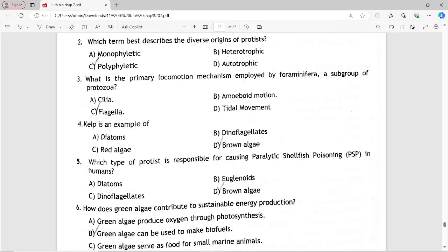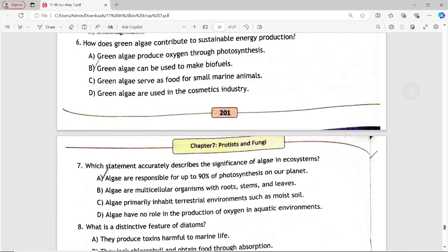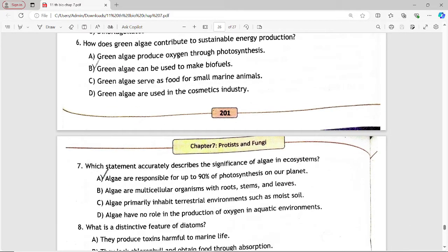Next MCQ: How do green algae contribute to sustainable energy production? Options are: green algae produce oxygen through photosynthesis; green algae can be used to make biofuels; green algae serve as food for small marine animals; green algae are used in the cosmetics industry. Answer is option B: green algae can be used to make biofuels.